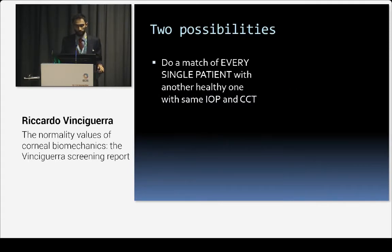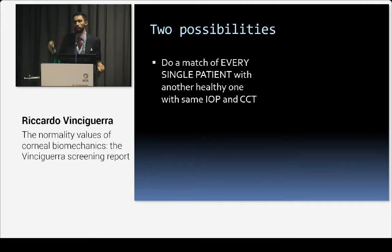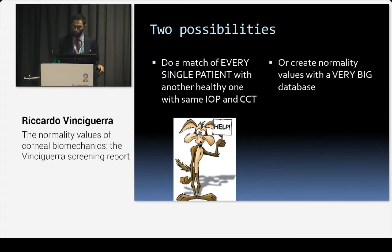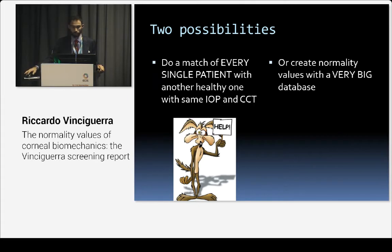We have two possibilities. The first is: we have a patient that looks abnormal, but we want to know if it is biomechanically abnormal. We have to match this patient with another healthy one that has exactly the same intraocular pressure and the same thickness. I bet that nobody can do this because it's almost impossible. Or, we create normality values with an extremely large database, as large as possible, to allow comparison at each IOP and each CCT.